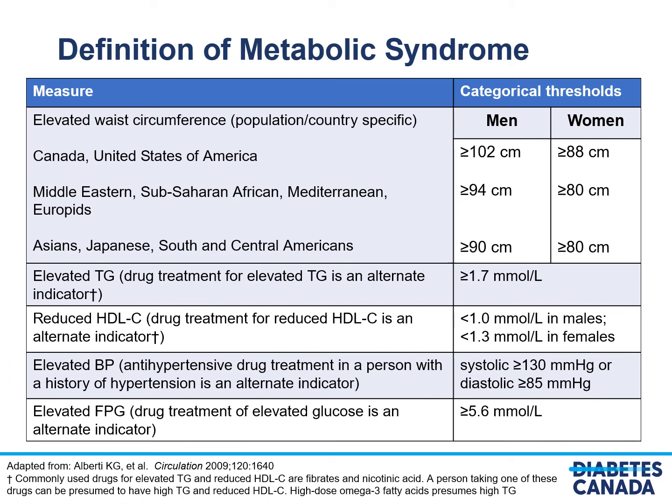Metabolic syndrome is a clustering of metabolic abnormalities related to insulin resistance that lead to an increased risk of cardiovascular disease. These include central adiposity defined differently for men and women of different ethnicities, elevated triglycerides and low HDL cholesterol, elevated blood pressure representing endothelial dysfunction, and an elevated fasting plasma glucose denoting dysglycemia.